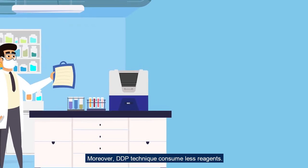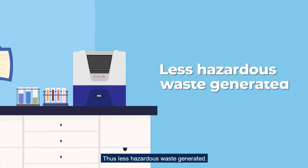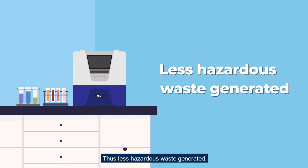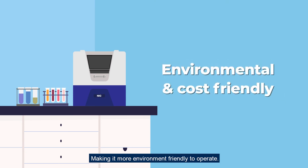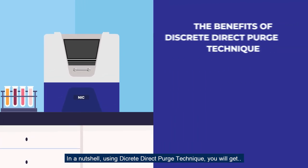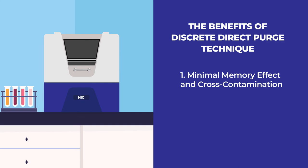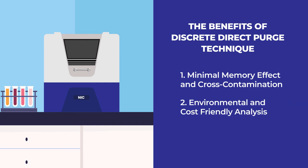Moreover, the DDP technique consumes less reagents, thus less hazardous waste is generated, making it more environmentally friendly to operate. In a nutshell, using the Discrete Direct Purge technique, you will get minimal memory effect and cross-contamination, environmental and cost-friendly analysis, and better reproducibility.